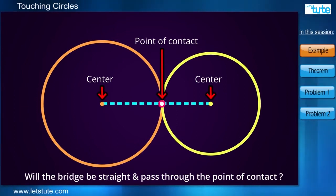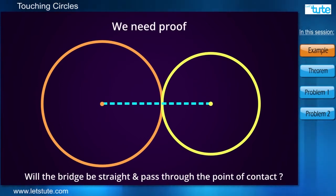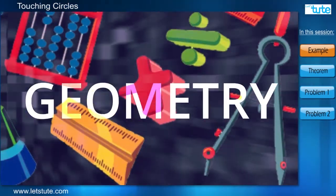I mean on the paper, it looks like it will be straight. But just because it is looking straight on paper, that does not mean it will be straight. So we need a 100% accurate proof for this. And when we need proofs, geometry comes to our rescue.